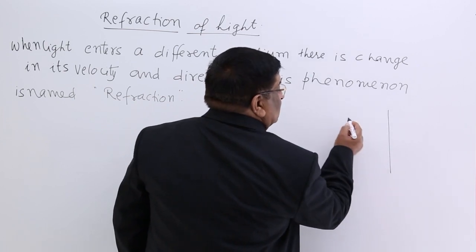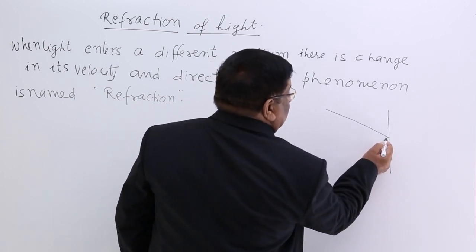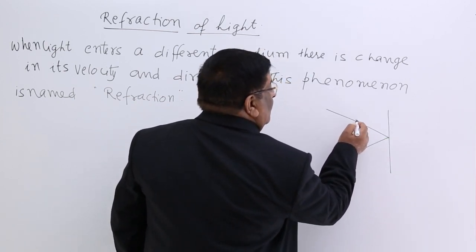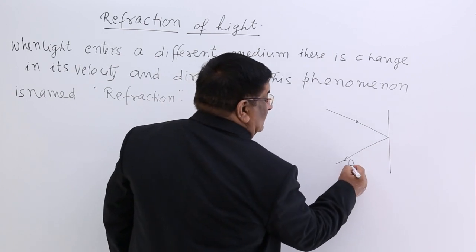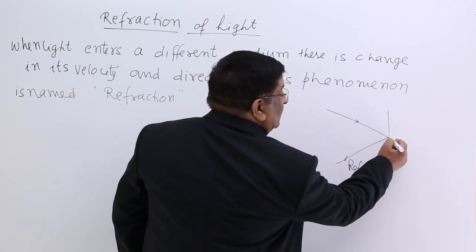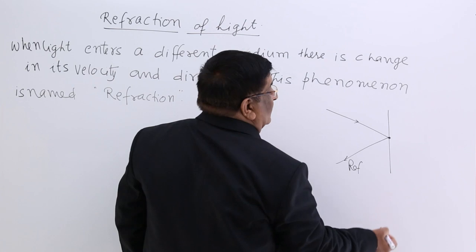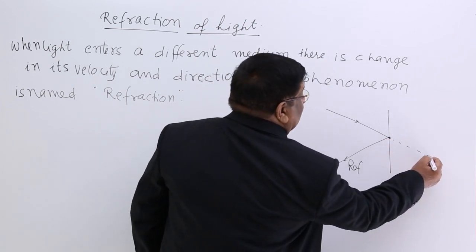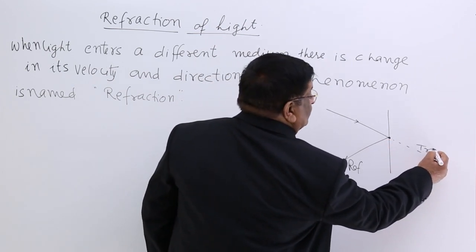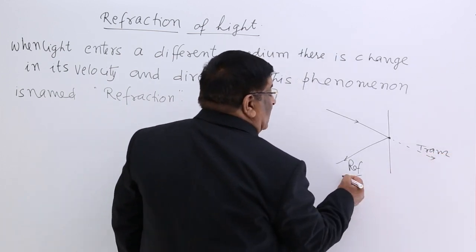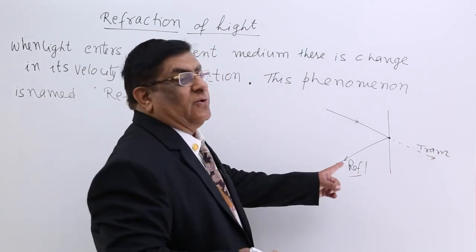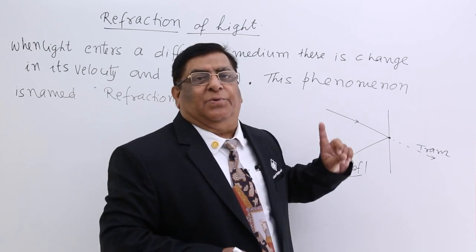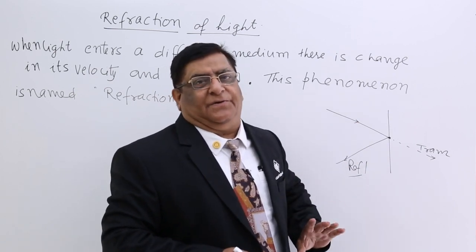One action is some of the light is reflected, some of the light is absorbed, and some of the light is transmitted inside. This reflection we have seen through the rules of reflection through plane surface and curved surface.